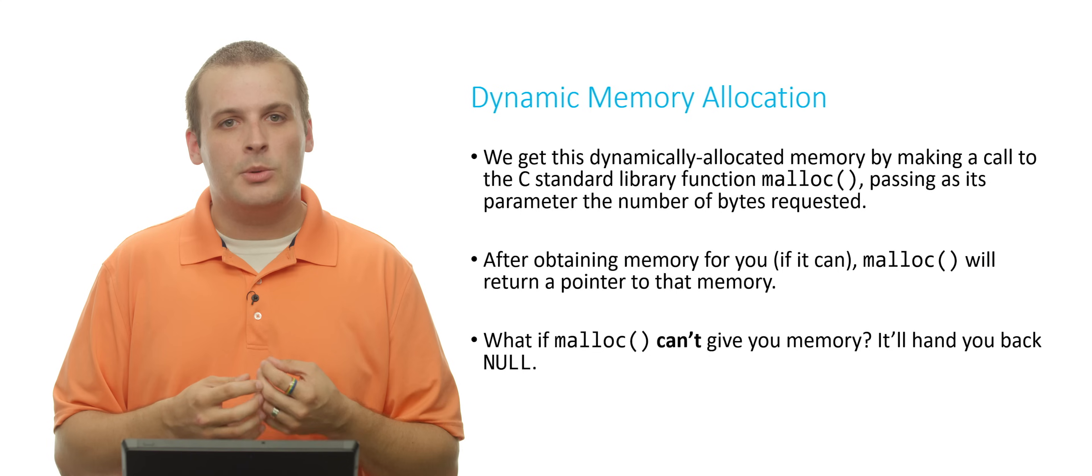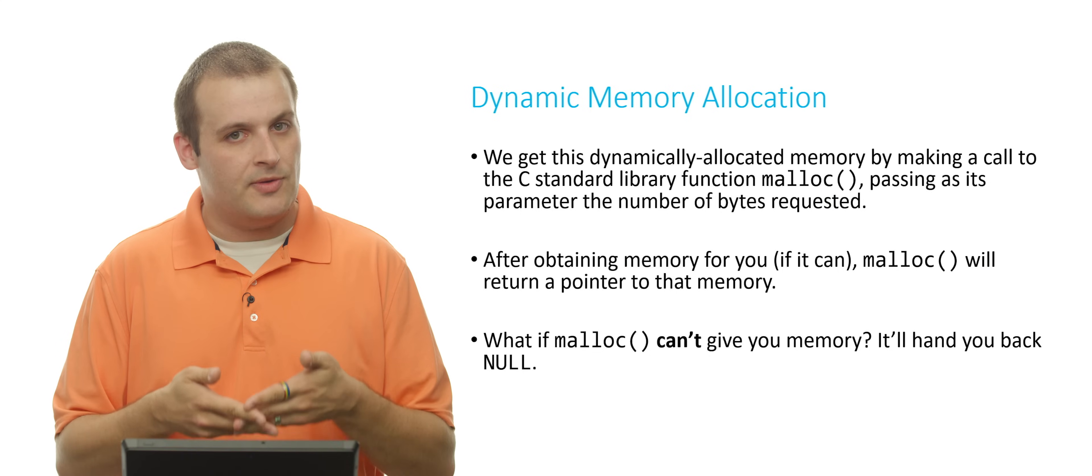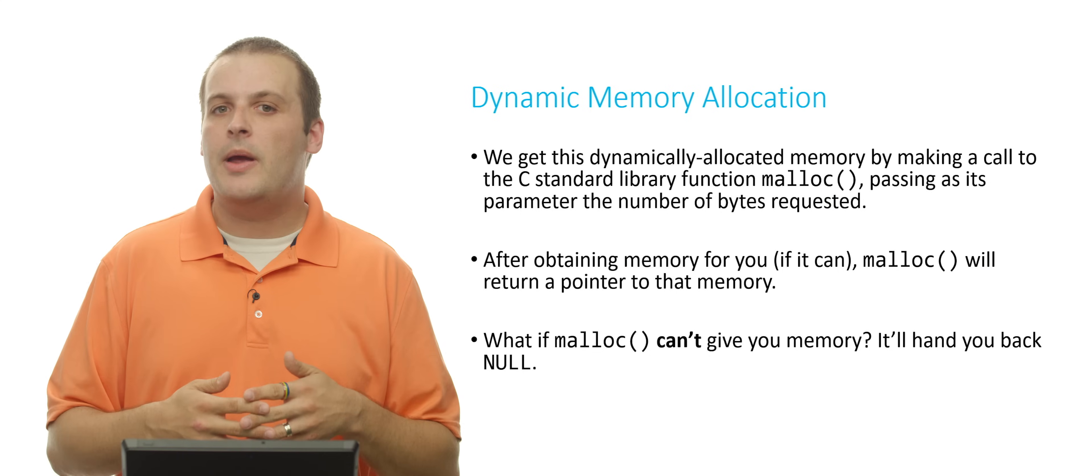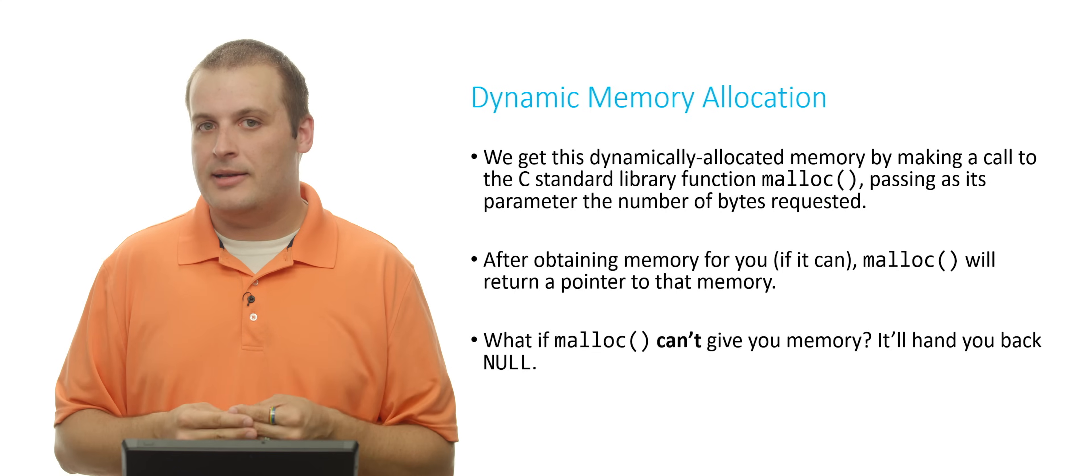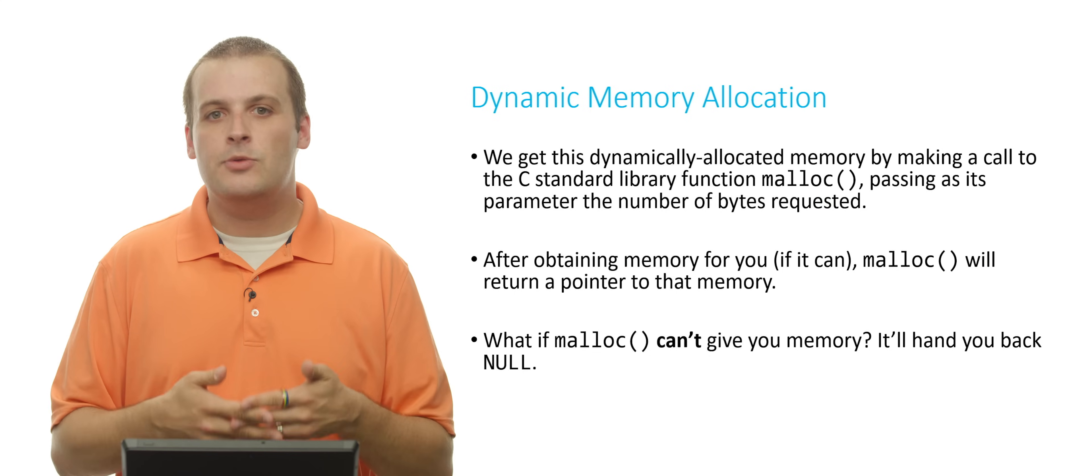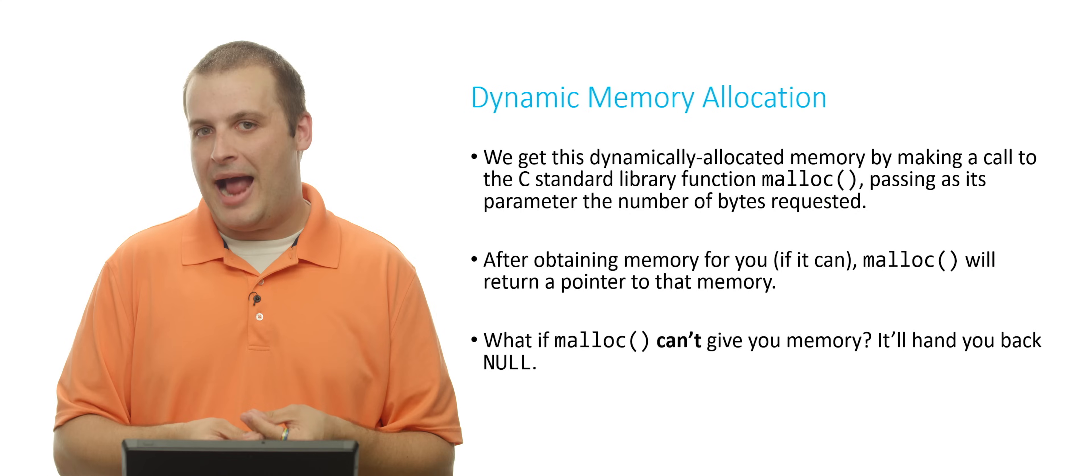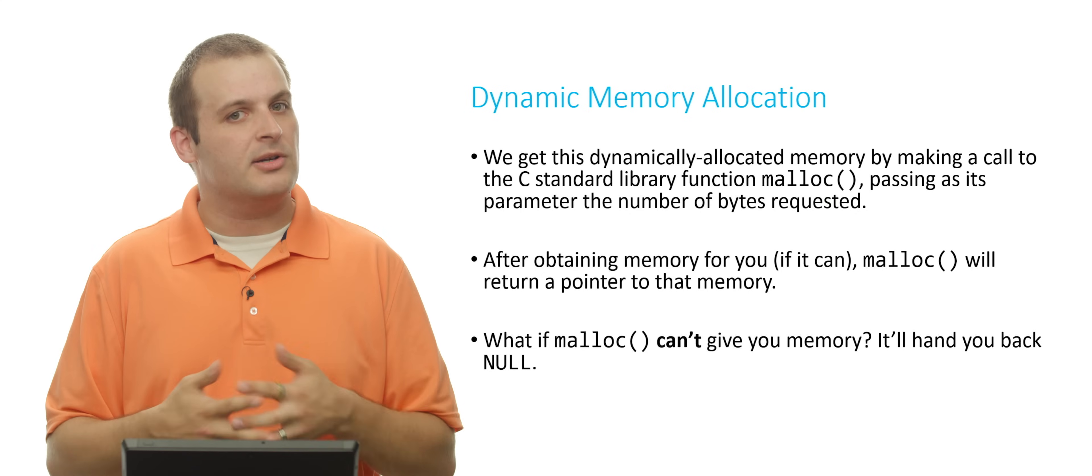And what it will do is it will return to you a pointer to that memory. Right? So the only way we're going to be able to access dynamically allocated memory or use it is by dereferencing the pointer that we get back from malloc. And that's why it's important to understand pointers before going forward.